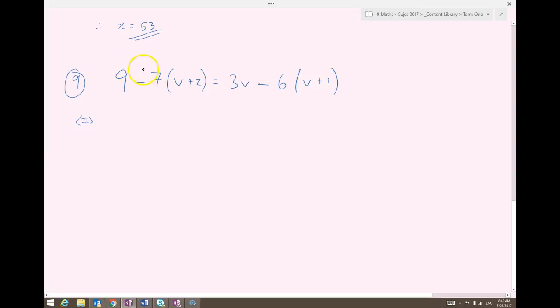It's very tempting at this point to go 9 minus 7 is 2. But you would remember that you need to multiply before you do any additional subtraction. So to simplify this left-hand side, I leave the 9. On the right-hand side, I'm going to go negative 7 times v is negative 7v. Negative 7 times 2 is negative 14. On the right-hand side, I'm just going to leave that 3v alone. And again, I'm going to expand the bracket. Negative 6 times v, negative 6v. Negative 6 times 1 is negative 6.